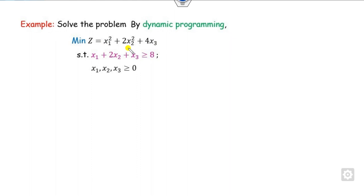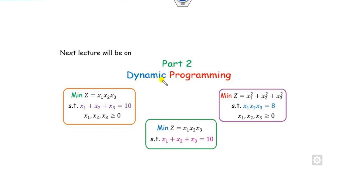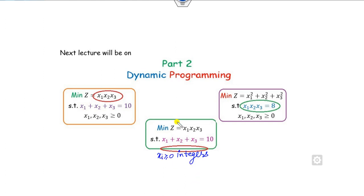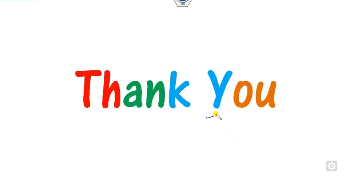This is the way you can solve dynamic programming in a simple manner. There is also a practice example — minimization with greater than constraints — try to solve it yourself and share answers in the comment box. In the next class, we will see Part 2 of dynamic programming, where objective functions and constraints use multiplication signs and variables x1, x2, x3 are integers — the discrete case. Till then, follow the link for updated videos. Best of luck, students!